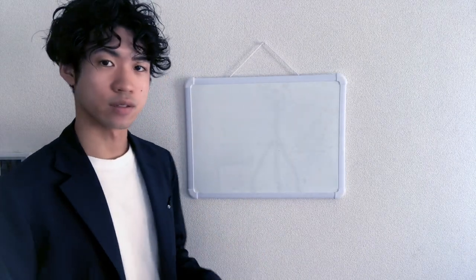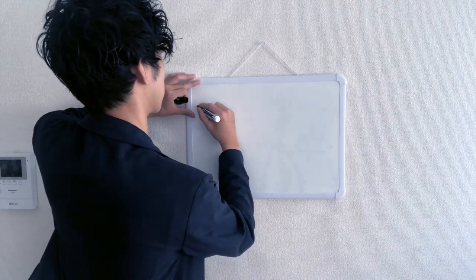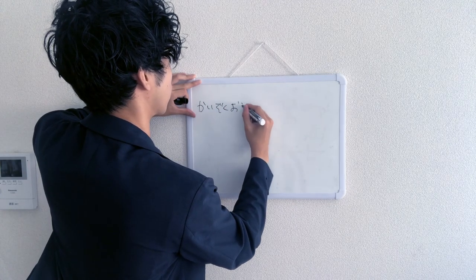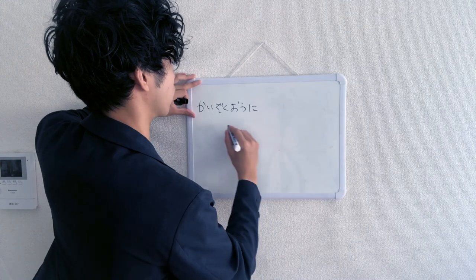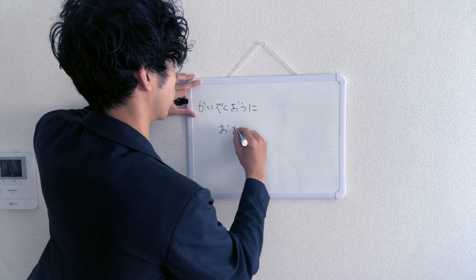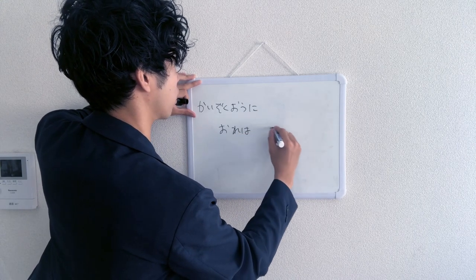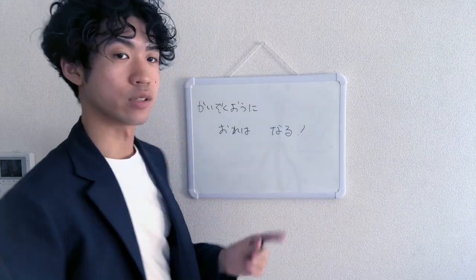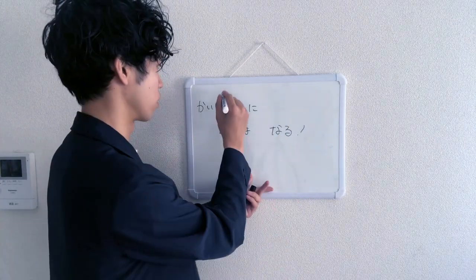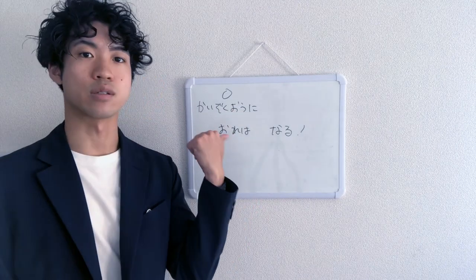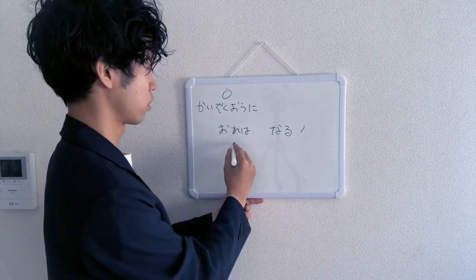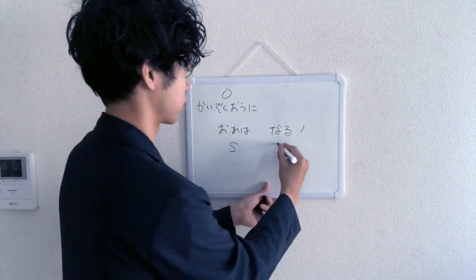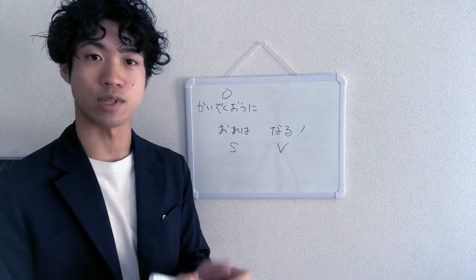OSV. Right. 海賊音, 俺は, 成る. You know it consists of OSV, so O is an object. 俺 is I, so that's a subject. 成る is to become, so that's a verb.